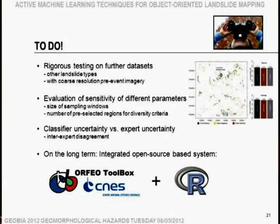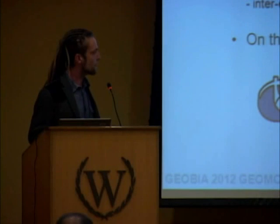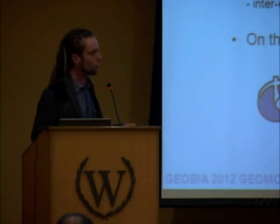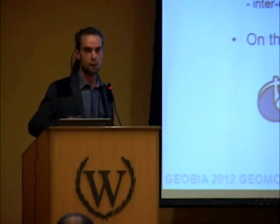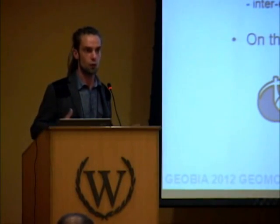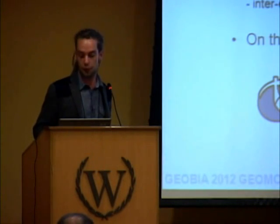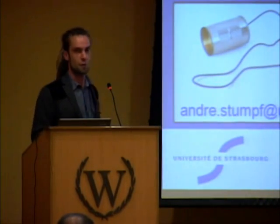The CNES, the French Remote Sensing Space Agency, is really pushing an open source development project for image analysis that comes together with a planned satellite launch. We are also working on an integrated system with a GUI, with R software running in the background to produce a useful interface. Thank you very much.